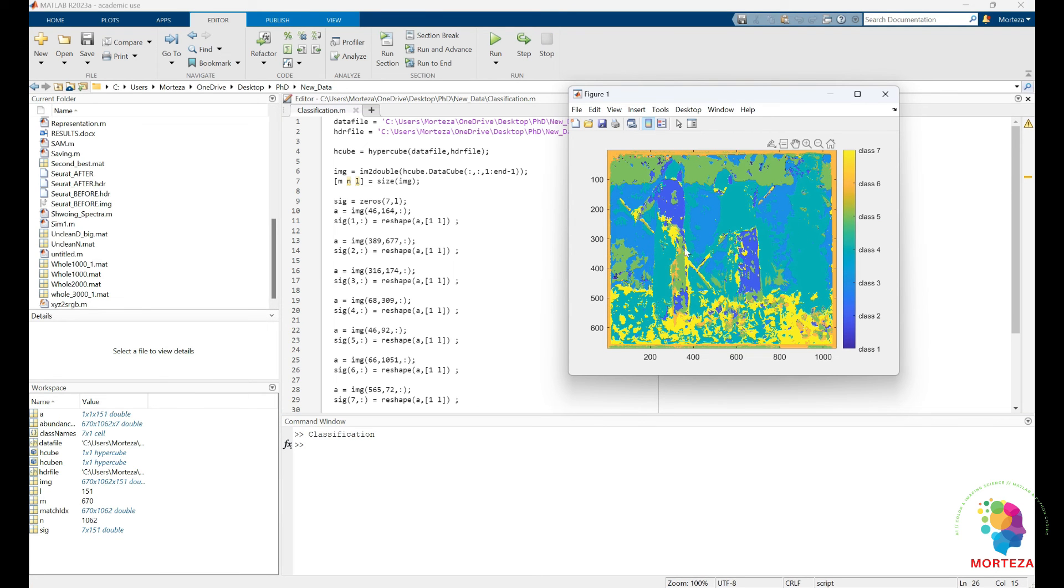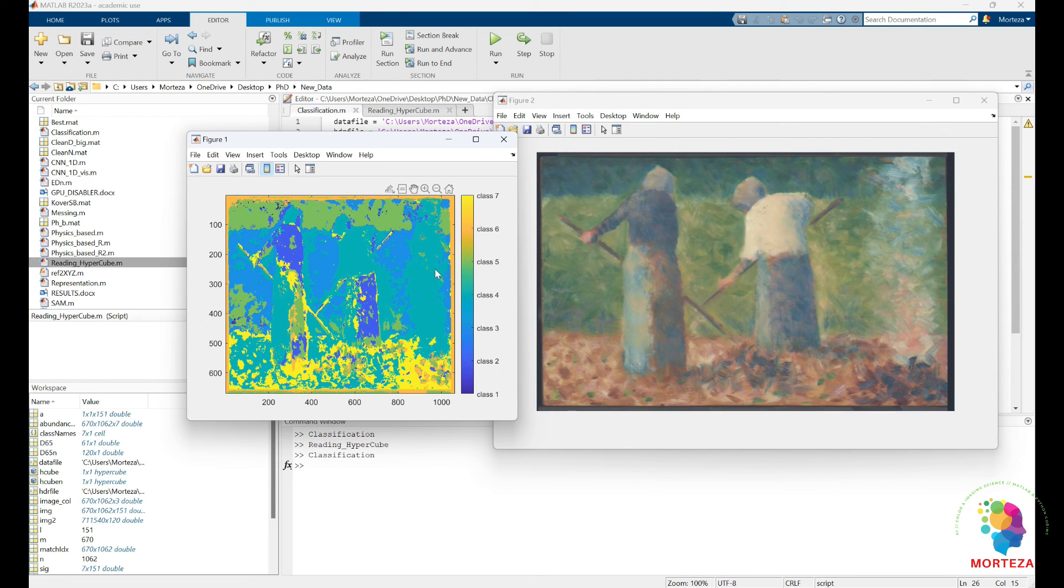So this is the result of classification. Let me also show you guys the original hyperspectral image. You could see that it is not bad, especially given that I chose the end members visually. You can see the seven classification maps on this hyperspectral image.